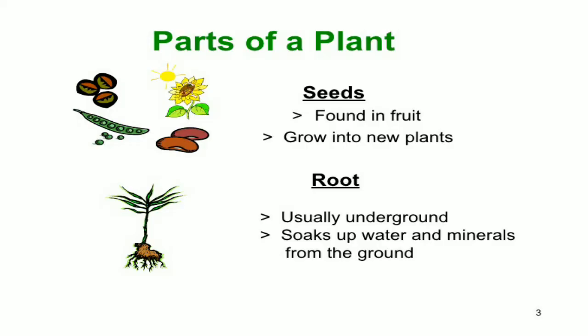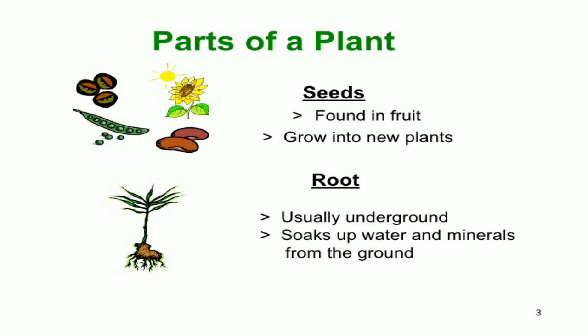Now, parts of plants. Here we can see some parts of a plant. First, it is the seed. Here we can see a photograph of a seed. Seeds are the most important parts of plants. Seeds are found in a fruit and grow into new plants.